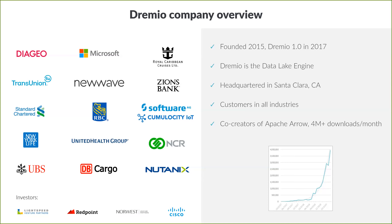That's a brief overview of how we can be so fast on the data lake. These four technologies — columnar cloud cache, reflections, Apache Arrow, and Arrow Flight — allow us to do sub-second queries on the data lake, where you couldn't achieve sub-second with massive stacks of complex pieces working together.